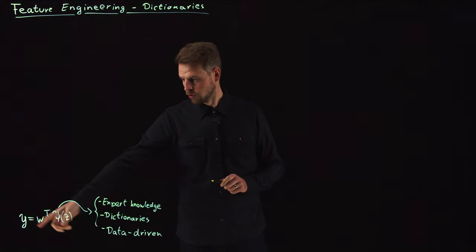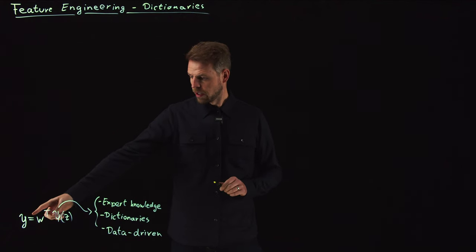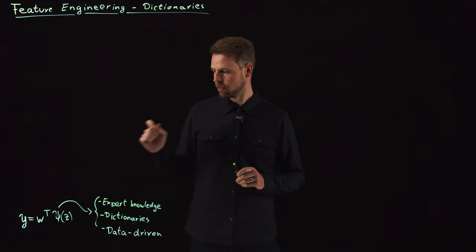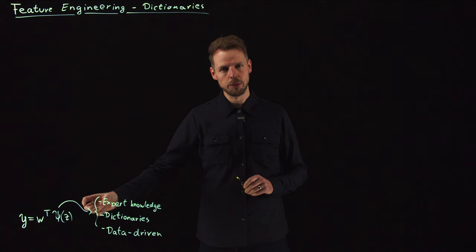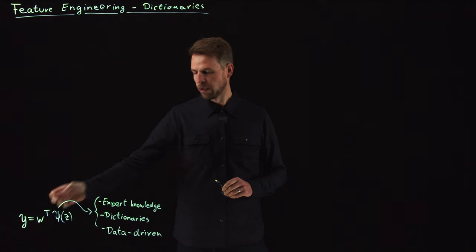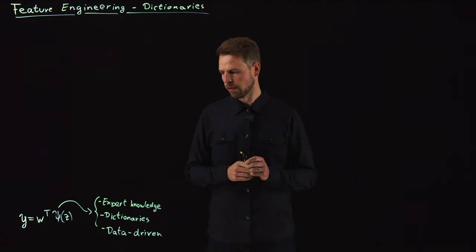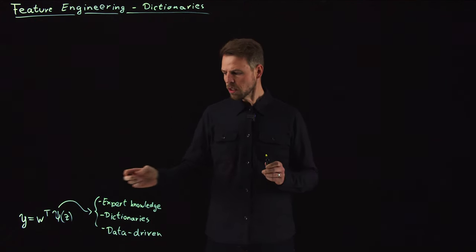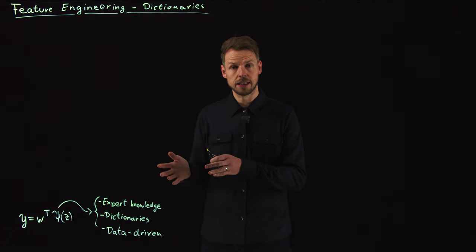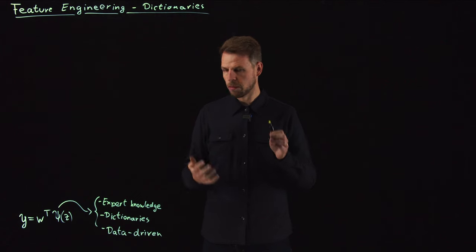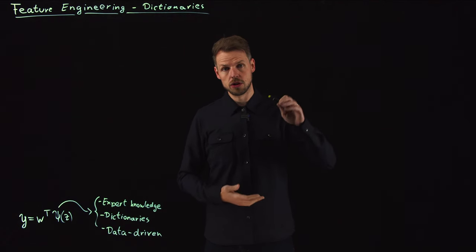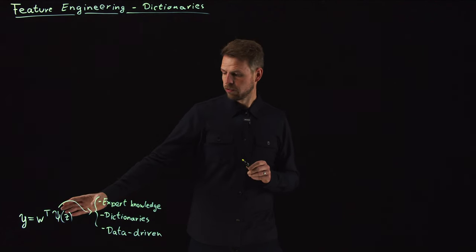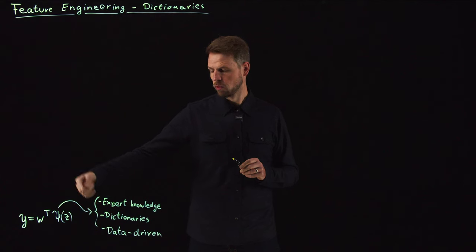Recall what we introduced in the video before was that our output Y is still a linear model, or is generated by a linear model, but it's no longer linear in Z, our input, but it's linear with respect to the weights. This is what matters for efficiency of training. This psi of Z is our feature map, which takes the input and transforms it in a linear or in many cases nonlinear fashion to some other space, potentially higher dimensional, but can also be lower dimensional depending on your application and your needs. Then you have this linear relationship with the weights to create your output.